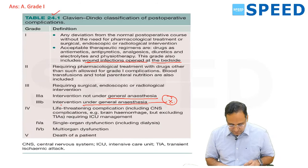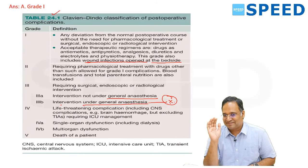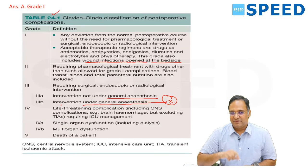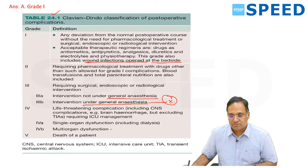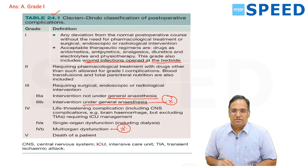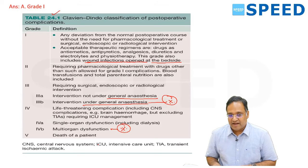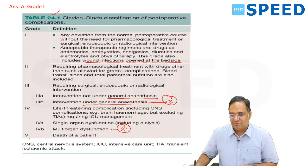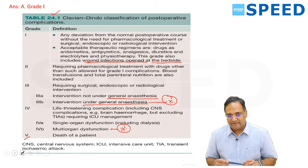They will ask about intervention requiring general anesthesia — a very popular question. Grade 4 is life-threatening complication including CNS complications such as brain hemorrhage, excluding TACS, requiring ICU management. Grade 4a is single organ dysfunction including dialysis; grade 4b is multi-organ dysfunction. According to Clavien-Dindo classification, MODS is stage 4b. Grade 5 is death. So, wound infection opened at bedside is grade 1.